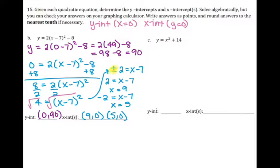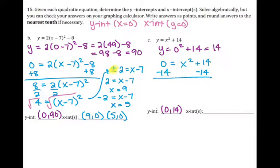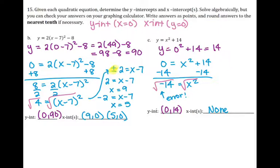Letter C: for my y-intercept I plug in zero for x — that gives me 14, so the ordered pair is (0, 14). For my x-intercept I plug in zero for y and subtract 14 from both sides: -14 = x². Taking the square root of a negative gives an error in the calculator because square roots of negatives are not real numbers — they are imaginary numbers you will learn about in Algebra 2. Since I cannot take the square root of -14, there are no x-intercepts. That graph does not cross the x-axis at all.